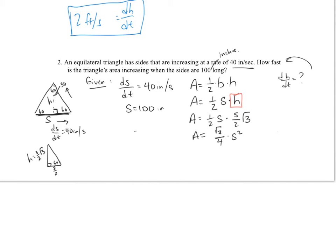Now we've set up everything. We have all our information and we need to find how fast the triangle's area is increasing — that's dA/dt. Differentiating both sides with respect to time: on the left side I get dA/dt, and on the right side I get 2 times root 3 over 4 times s times ds/dt, which reduces to root 3 over 2 times s times ds/dt.